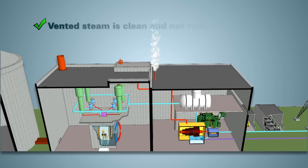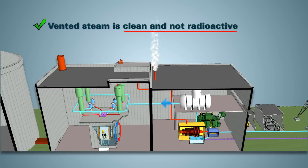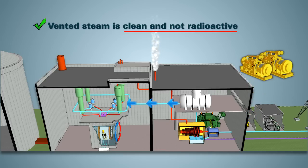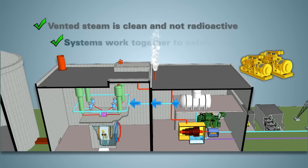The steam that is vented into the environment is clean and not radioactive. Water continues to be added in the steam generators by pumps powered by the emergency power generators. Together, the pressure relief valves and the added water maintain natural circulation to safely cool the reactor.